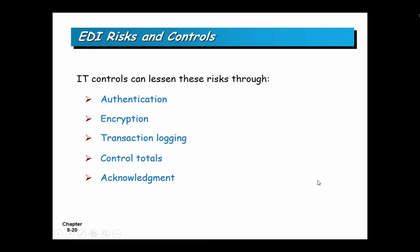Controls for EDI: authentication — make sure the other side is who you think they are. Encryption — when sending data, encrypt it so a third party has difficulty decrypting it. Log all transactions for an audit trail. Use control totals to make sure everything looks realistic. And to prevent data entry errors, use acknowledgement: they send you an order for 100, you confirm — do you really want 100? — and if they say yes, you ship 100.